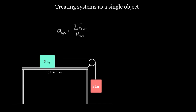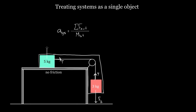When you plug in these external forces, external means not internal to the system. If I think of this five kilogram box and this three kilogram box as a single mass, tension would be an internal force because it's applied internally between two objects inside our system. But the force of gravity on the three kilogram mass is an external force because the Earth is pulling down on it, and the Earth is not part of our system. Similarly, the normal force is external but is exactly canceled by the gravitational force, so they won't affect the result.